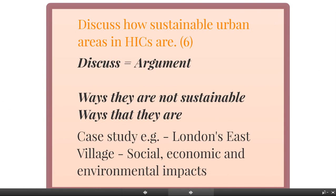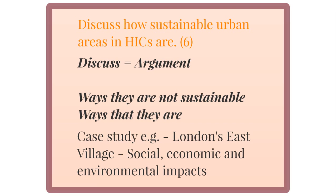The next question is your six mark question, which is slightly more difficult because you really need to look at the command words. This question says 'discuss how sustainable urban areas in HICs are.' Boxing my command word — discuss — tells me I need to form some sort of argument. Underlining the key words: sustainable and HIC are quite important, because if you waffled on about the Makoko floating school in Lagos, that would answer the question had it said LIC and not HIC. Discussion means you need an argument — the ways they are not sustainable and the ways that they are in order to access the highest levels on the mark scheme.